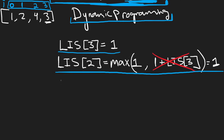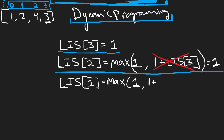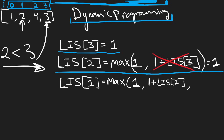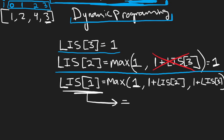Now let's get the longest increasing subsequence starting at index one. We could take two by itself — that's one choice, length one. We also have a choice of one plus the longest increasing subsequence starting at four, and we're allowed to do this because two is less than four, so the subsequence is increasing. Another choice is one plus LIS[3], because two is less than three. Both of these equal two, so LIS[1] = 2.